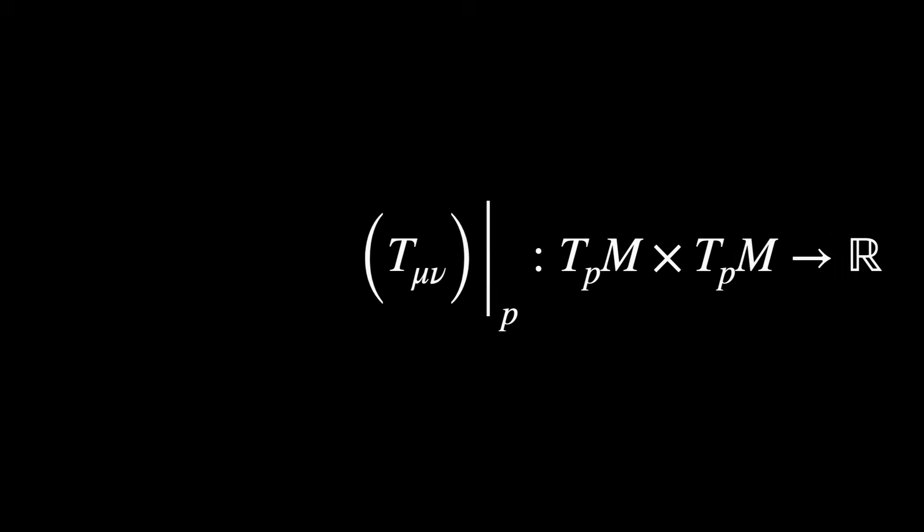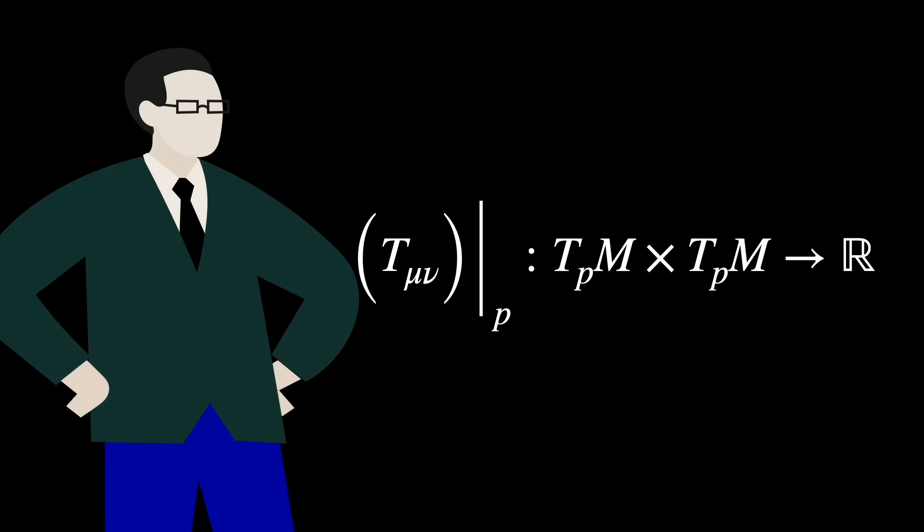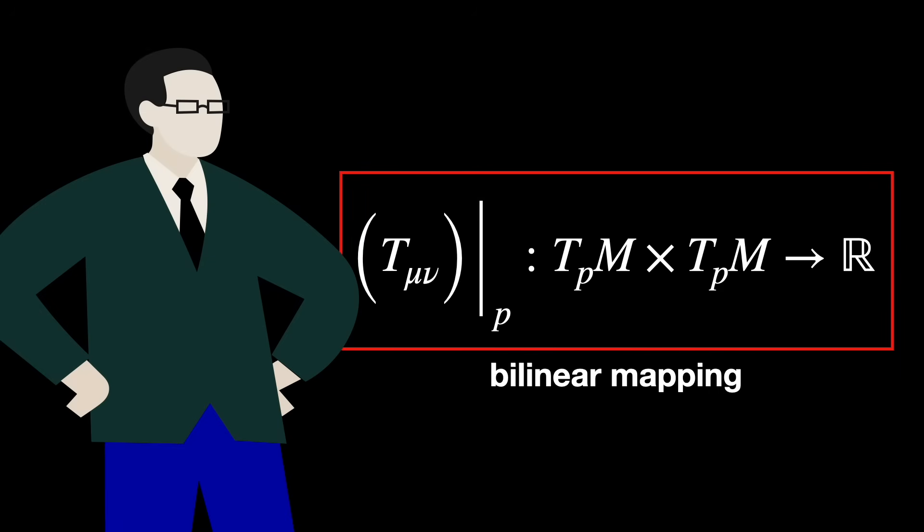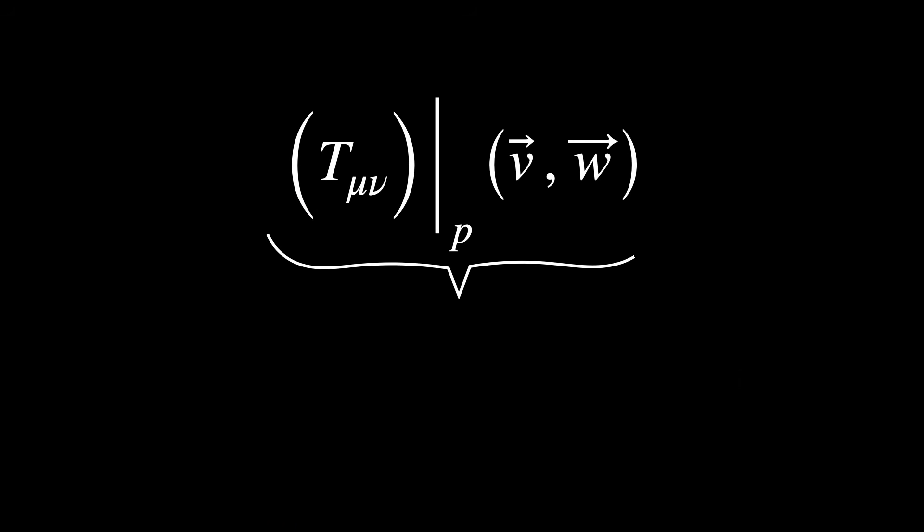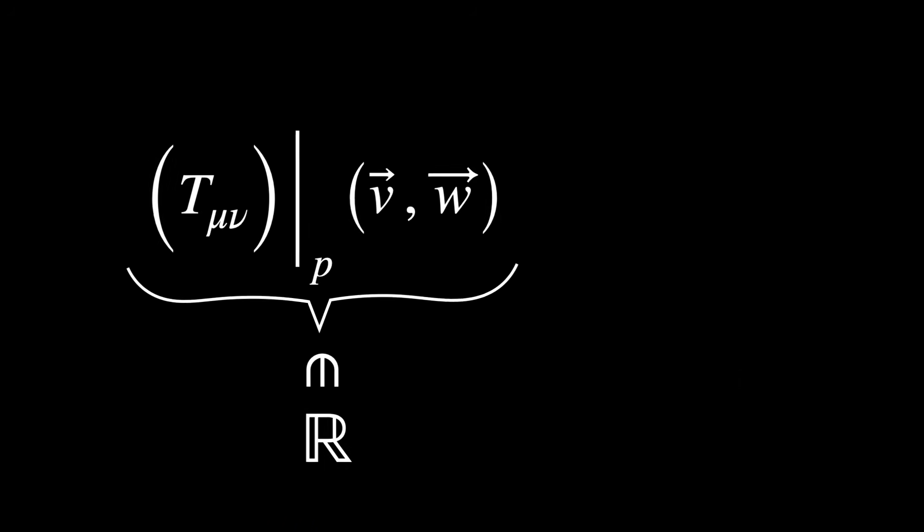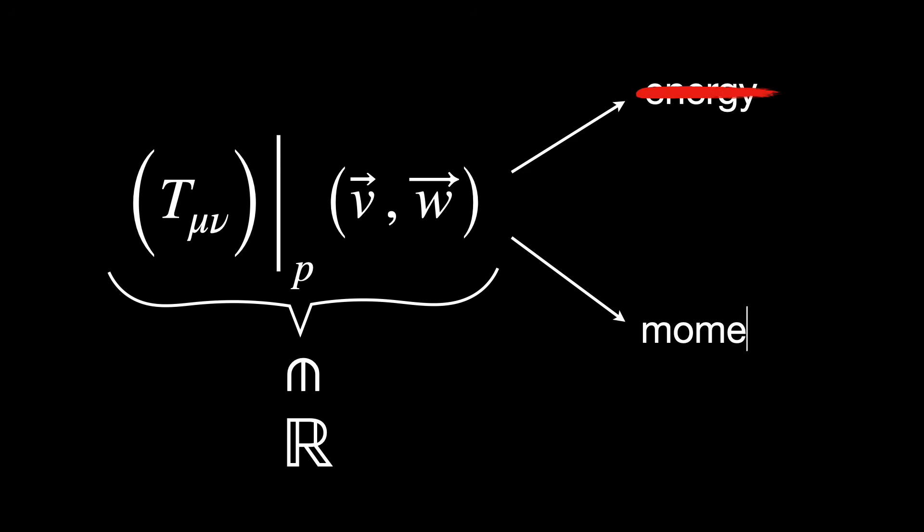It is an intrinsic geometric object. The mathematician would also describe this tensor as a bilinear mapping, so a function that takes two tangent vectors at a point on the manifold and returns a single real number. This real number, the output of the bilinear map, is not interpreted as energy or momentum, as a physicist would, but instead it's viewed mathematically as encoding a relation between directions on the manifold at that point.